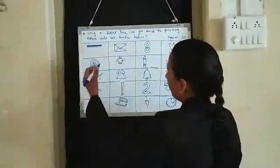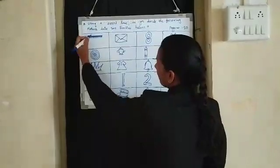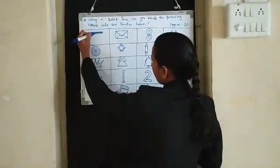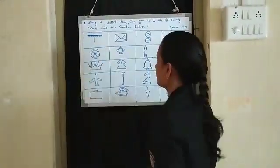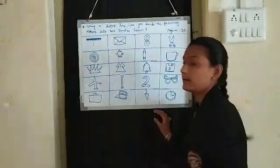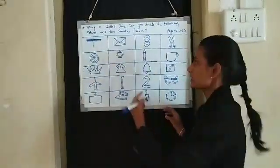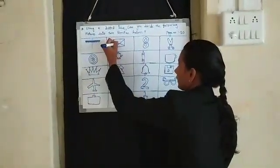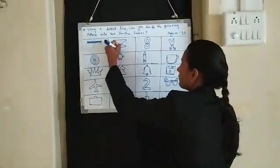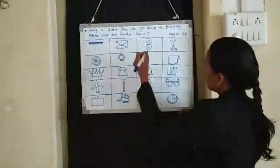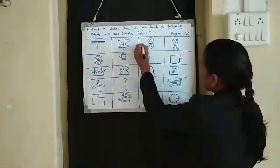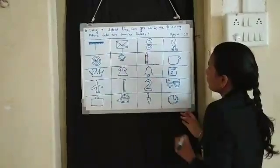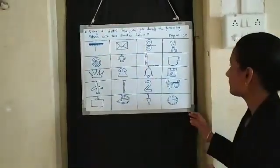First one, a comb is given. Can we divide? Yes, we can divide into two similar halves. Then, this message box is given — also we can divide into two similar halves. Then, this 8 digit — we can divide into two similar halves.